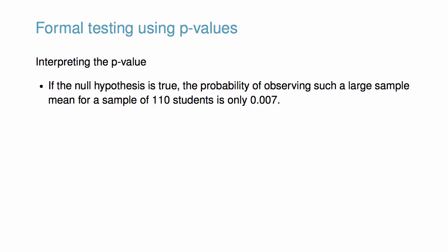If the null hypothesis is true, the probability of observing such a large sample mean for a sample of 110 students is only 0.007. That is, if the null hypothesis is true, we would not often see such a large mean.